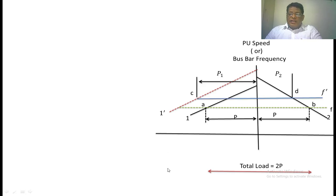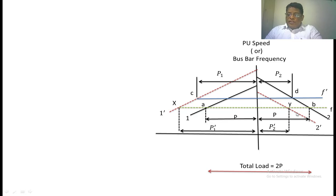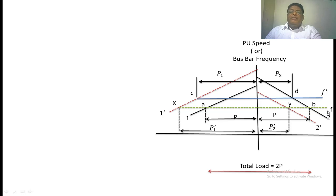Now the power supplied by the first generator becomes C1 and the power supplied by the second generator becomes C2. The first generator will supply more power while the second generator supplies less power, and the frequency changes to the value at C1. But in parallel operation, we must maintain the frequency as constant. So the mechanical input to the second generator is decreased, shown as a red dotted line. With respect to this new characteristic, the new operating points of the two generators change to X and Y. With this new operating point, after decreasing the mechanical input to the second generator, the power supplied by the first generator becomes C1 and the power supplied by the second generator becomes C2, where the frequency is constant.